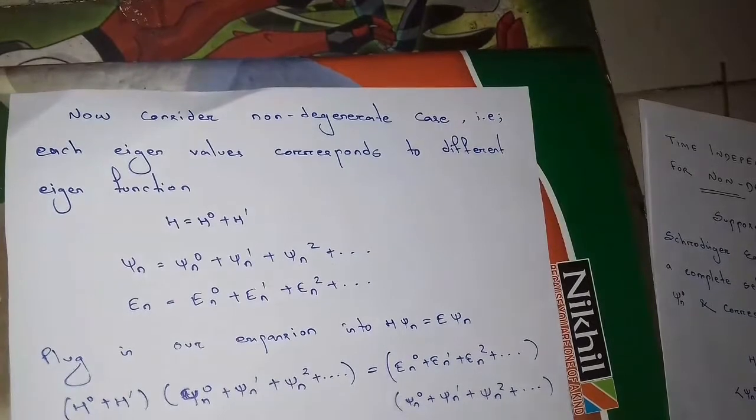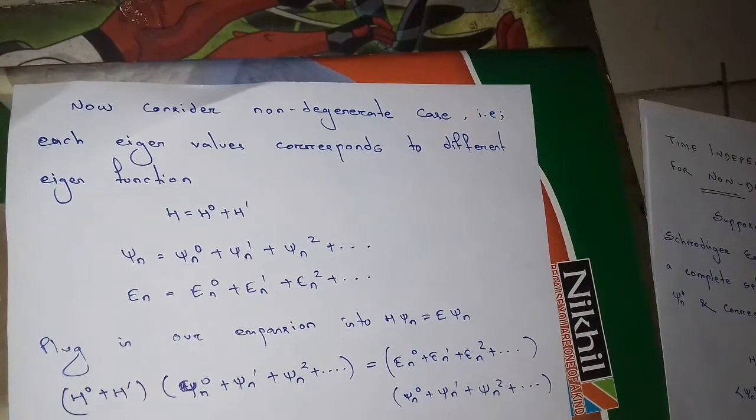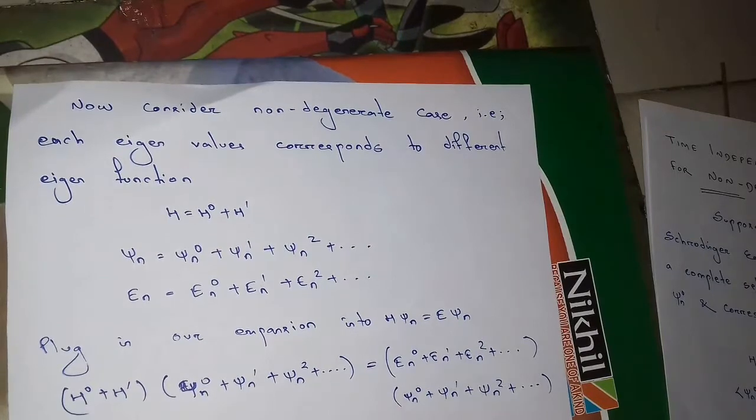Now, consider a non-degenerate case that is each eigenvalue corresponds to different eigenfunctions. H equals to H0 plus H dash whereas H0 is unperturbed and H dash is perturbed. We will have to find the wave function psi n equals to psi n0 plus psi n1 plus psi n2 and so on, and energy en equals to en0 plus en1 plus en2 and so on.